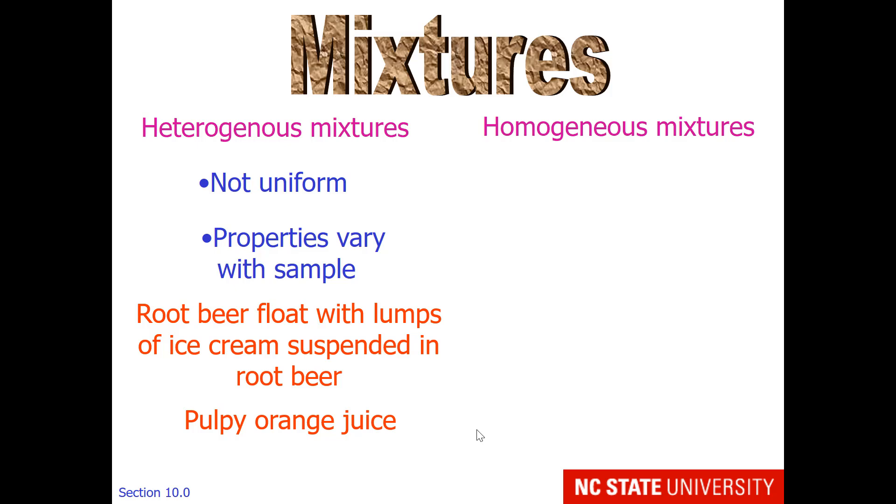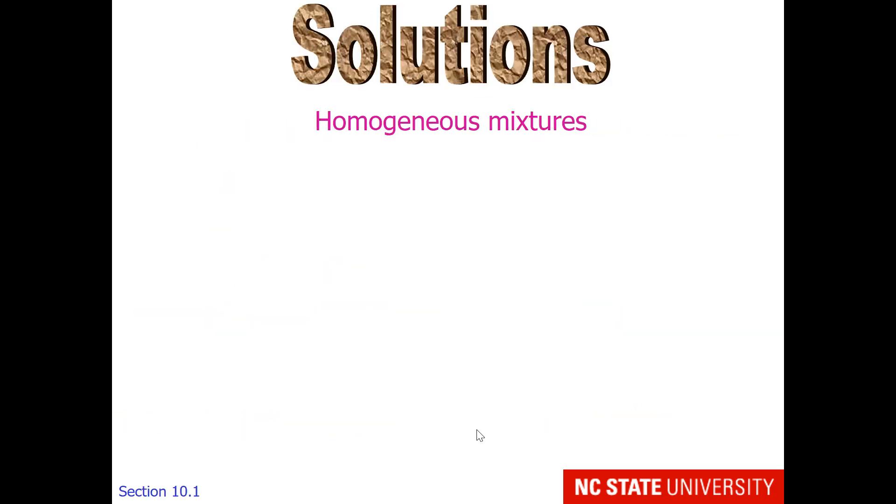Homogenous mixtures are what chemists like to deal with because they are uniform. So every sample is the same regardless of if you take it from the top or bottom of the container. Dr. Pepper would be a homogenous mixture or apple juice. Homogenous mixtures have two parts, the solute and the solvent.